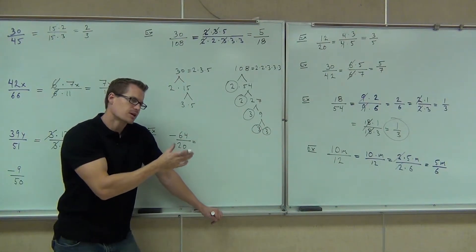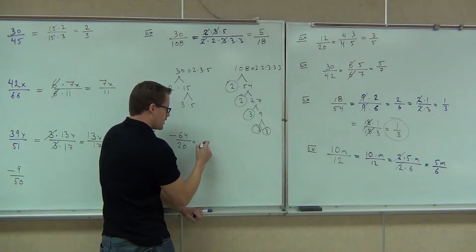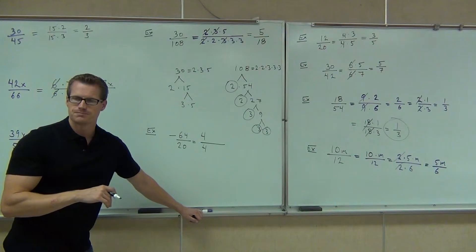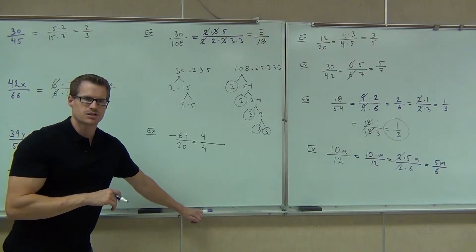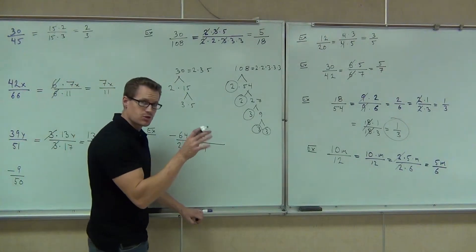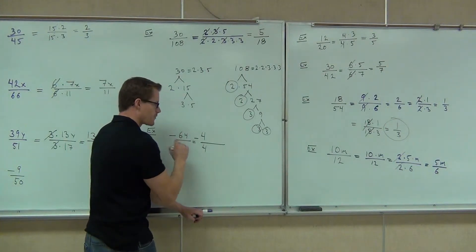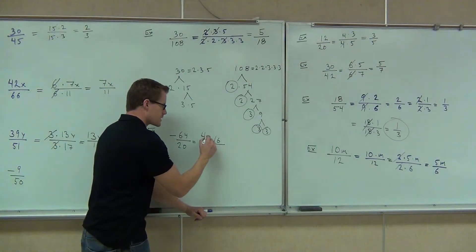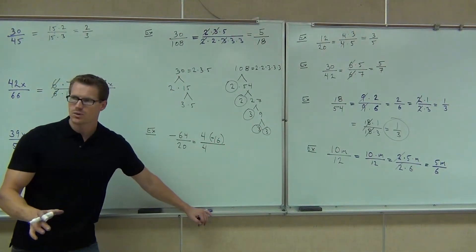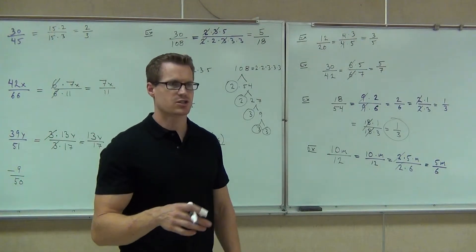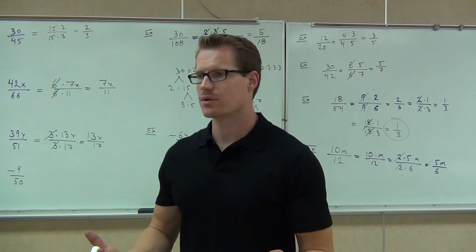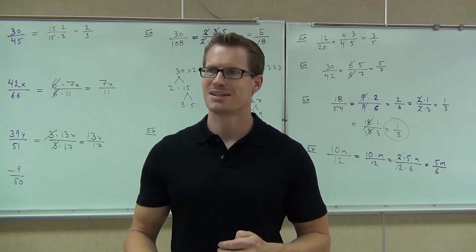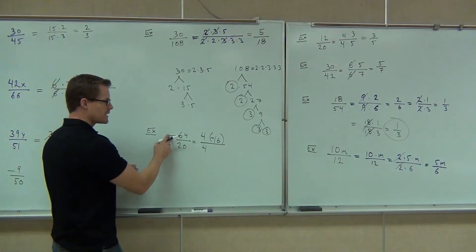We can just leave that negative out front and forget about it. In our fraction, four is going into both the numerator and denominator. Four times what gives you negative 64? Negative 16. Good. You have two options: you can leave the negative out front the whole time and put 16, or you can write negative 16. Either way is fine as long as you have that negative. You can't just miraculously lose the negative — that will mess your answer up. That's bad mojo. Don't lose the negative and you'll be fine.